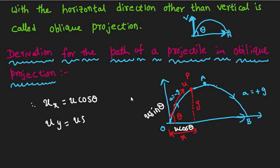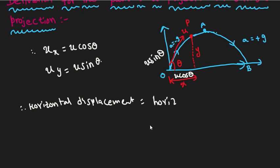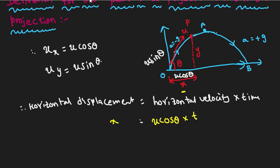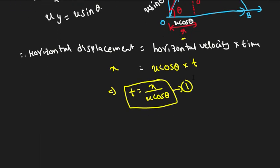If you want to find the vertical component, u sinθ equals the vertical velocity. For horizontal displacement, the formula is: horizontal displacement equals horizontal velocity into time. Horizontal displacement equals x, so T equals x divided by u cosθ.